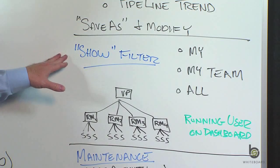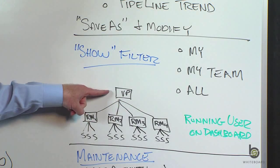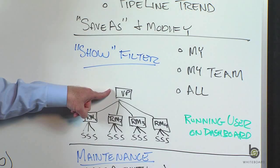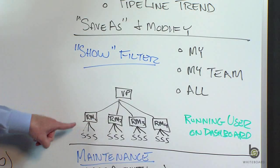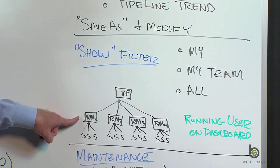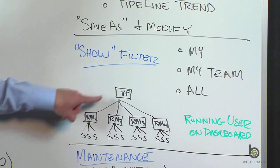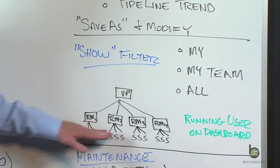If I filter my report on My, and I am the VP of Sales and I run that report, I'm only going to see opportunities where I — the VP of Sales — am the opportunity owner. If a regional manager runs that My report, same thing: only opportunities owned by that regional manager, not including their subordinates.